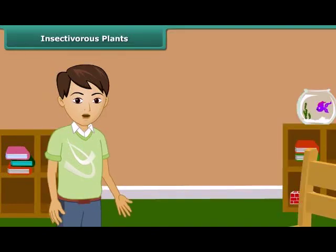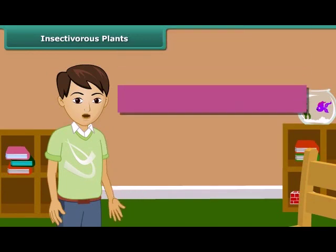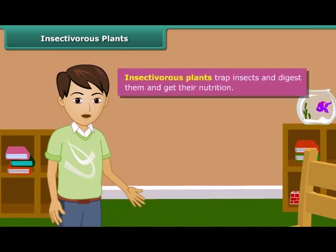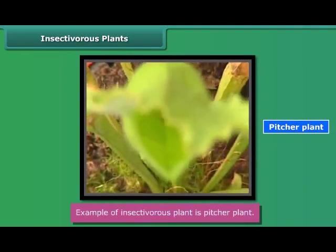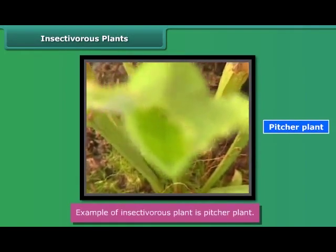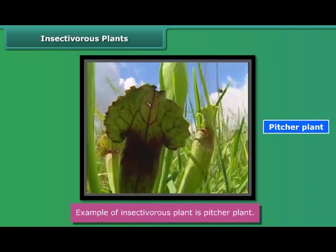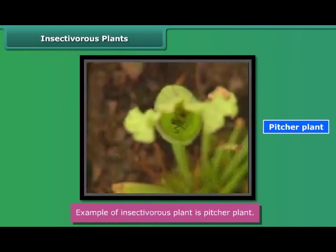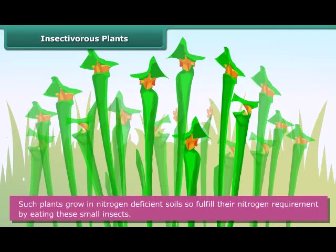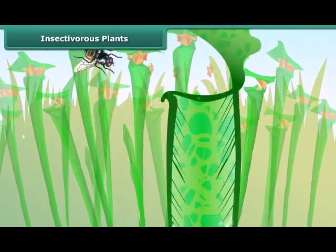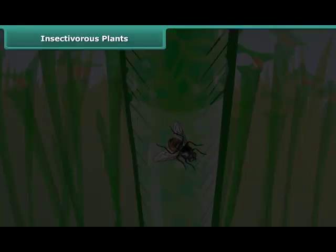The next category is insectivorous plants. There are a few plants which can trap insects, digest them, and get nutrition — for example, pitcher plants. These plants can synthesize their own food by photosynthesis, but they grow in nitrogen-deficient soils. So such plants fulfill their nitrogen requirement by eating small insects, and hence are called insectivorous plants.